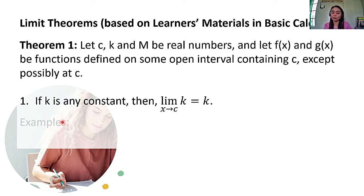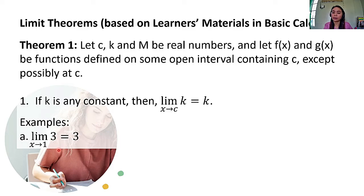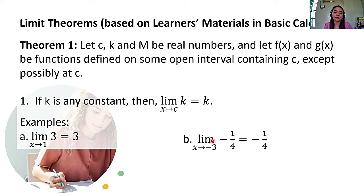Here are some examples. The limit of 3 as X approaches 1 is equal to 3. So our K here is 3, and this limit is also equal to 3 regardless of what value our C is. Next, the limit of negative 1/4 as X approaches negative 3 is equal to negative 1/4.